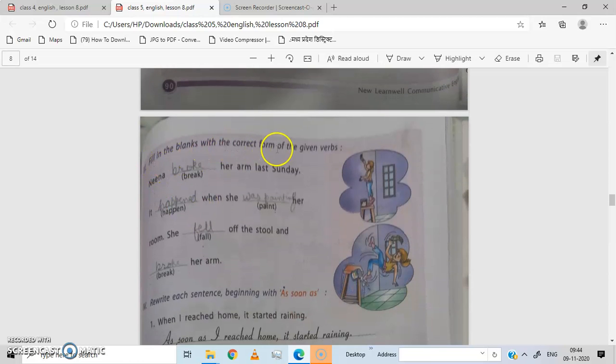Next, fill in the blanks with the correct form of given words. Nina break her arm last Sunday. Last Sunday means past tense, so not break but broke. Nina broke her arm last Sunday. It happened when she was painting her room. She fell off the stool. Fall's past tense is fell. She fell off the stool and broke her arm. Okay students, in this way we have to do this exercise.